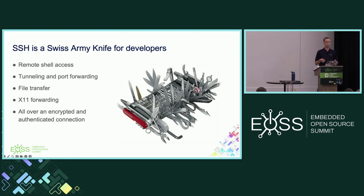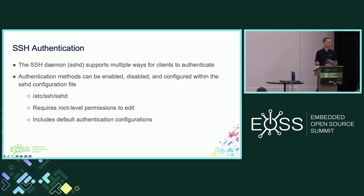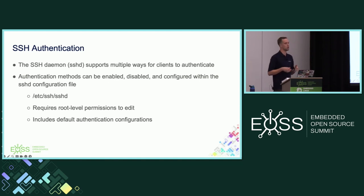SSH is a really powerful option for developers to use with their devices. As far as authentication goes, sshd — the daemon that runs on the host — supports multiple ways for clients to authenticate. Authentication methods can be enabled, disabled, and configured within the sshd configuration file, which is located at /etc/ssh. You will need root-level permissions to edit this file, and it generally comes with default authentication configurations, so make sure you know what those are whenever you're modifying them.